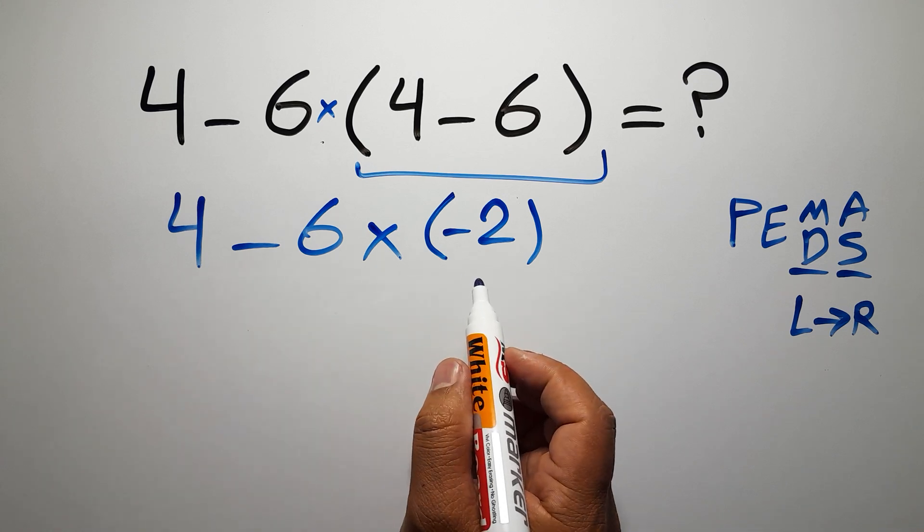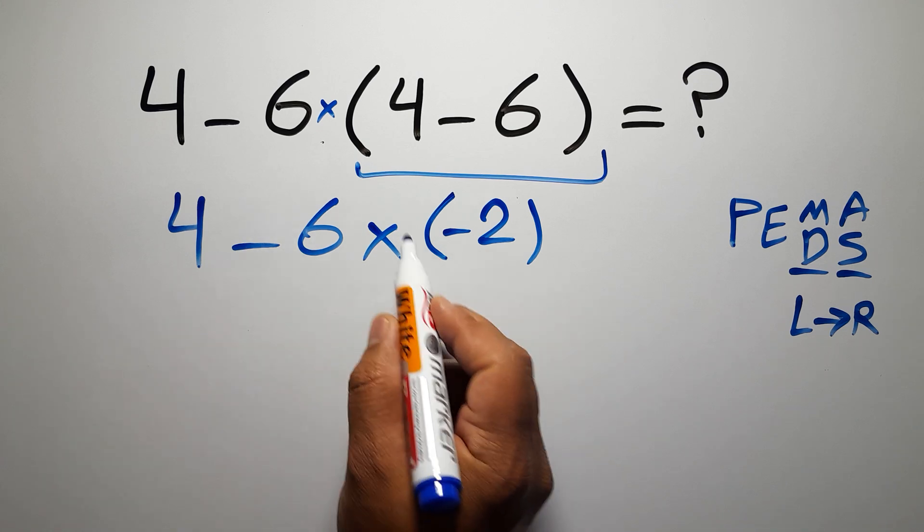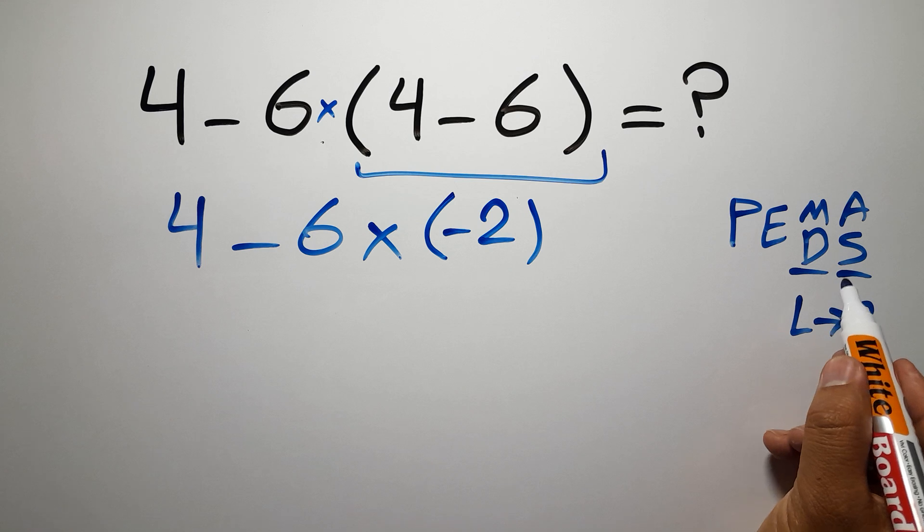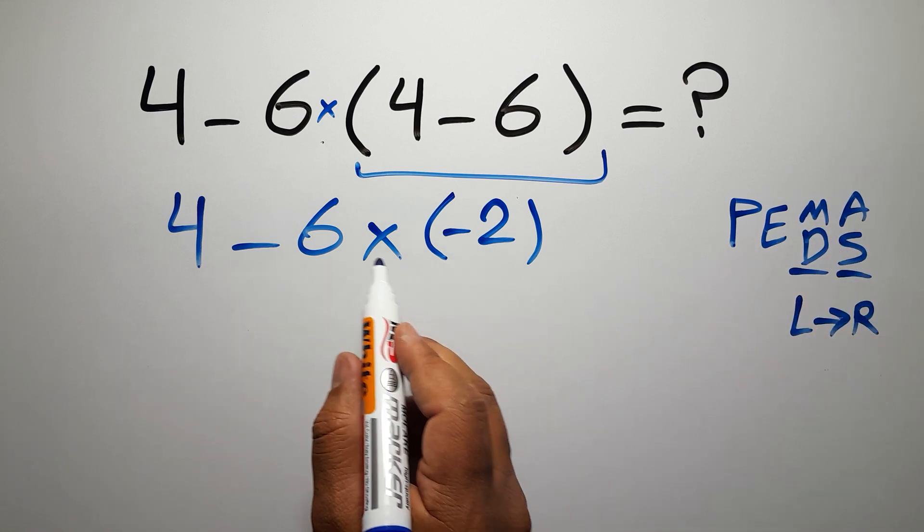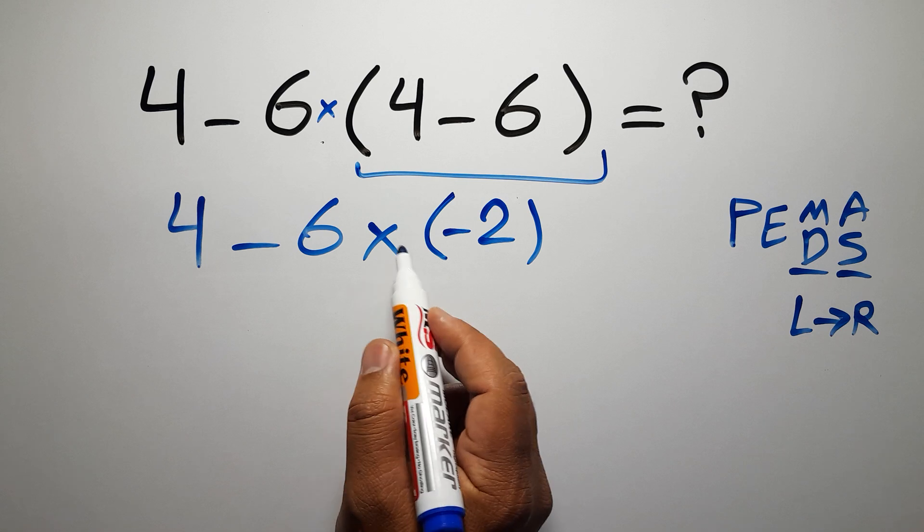In this step, we have one subtraction and one multiplication. In PEMDAS, multiplication comes before subtraction. So here, first we have to do this multiplication.